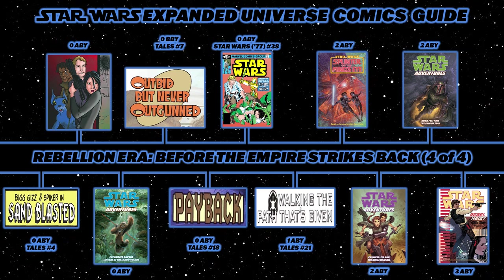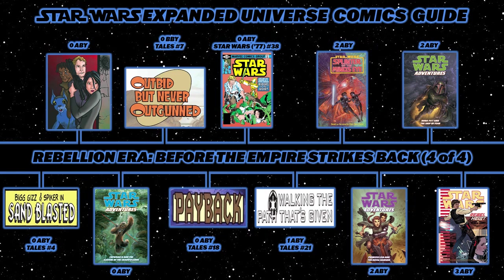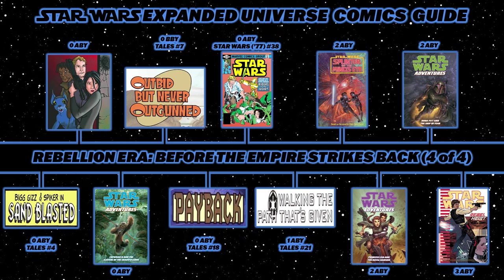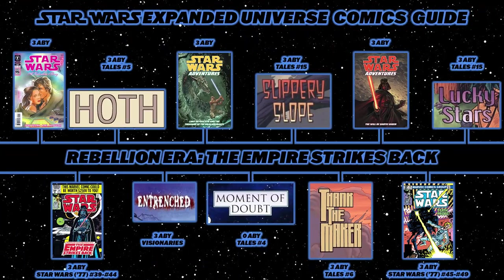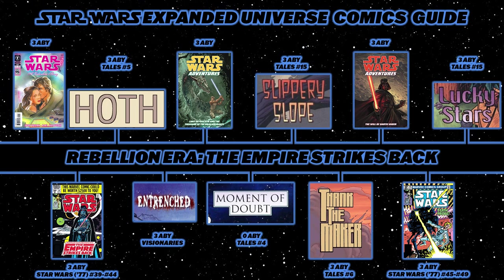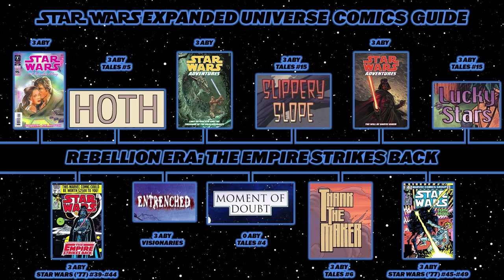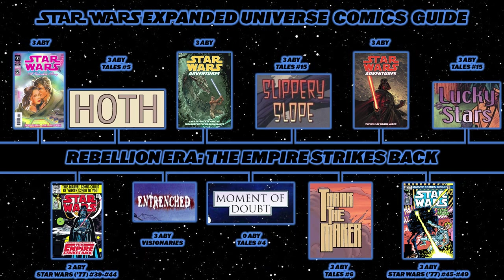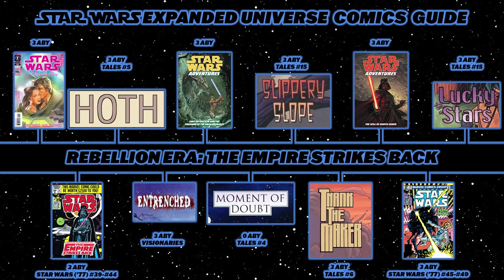Then Star Wars Adventures: Princess Leia and the Royal Ransom, followed by Star Wars Adventures: Boba Fett and the Ship of Fear. Then the 2014 four-issue miniseries Rebel Heist. Moving to the next graphic, we've finally arrived at the Empire Strikes Back — but first, a Valentine's Day one-shot set shortly before the film focusing on the relationship of Han and Leia. Then read Marvel 1977's adaptation of The Empire Strikes Back in issues 39 through 44.